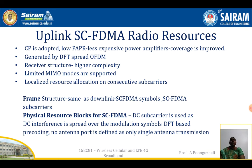Since SC-FDMA uses DFT for signal processing, the receiver structure is of higher complexity, and only limited MIMO modes are supported. Localized resource allocations are done on consecutive subcarriers using PRBs. The frame structure for uplink is the same as downlink (structures 1 and 2), but uses SC-FDMA symbols and SC-FDMA subcarriers instead. Unlike OFDMA, SC-FDMA uses a DC subcarrier, where DC interference is spread over the modulation symbols. Pre-coding is done using DFT-based pre-coding.